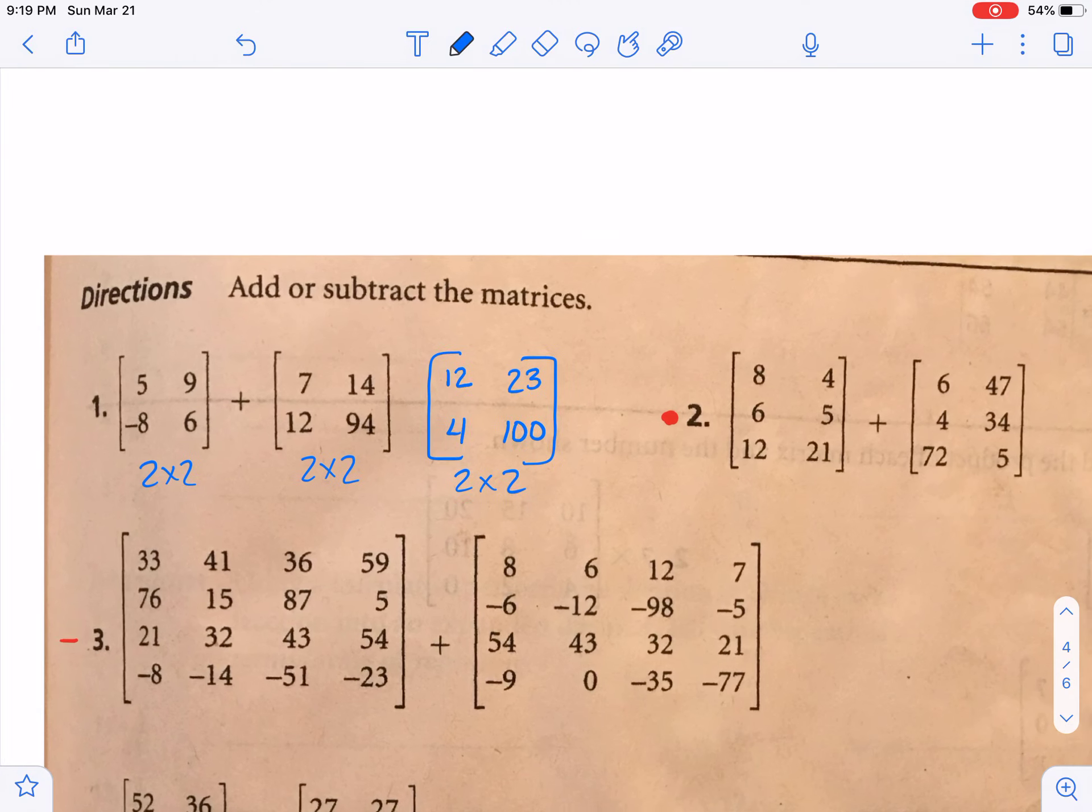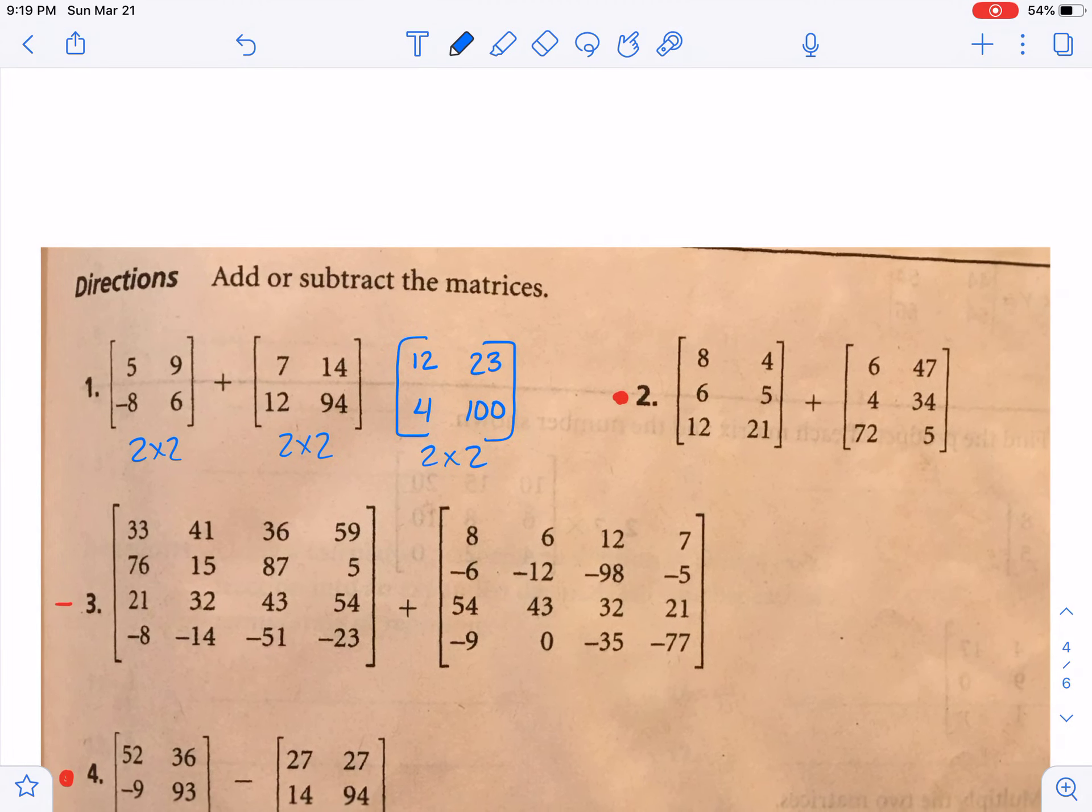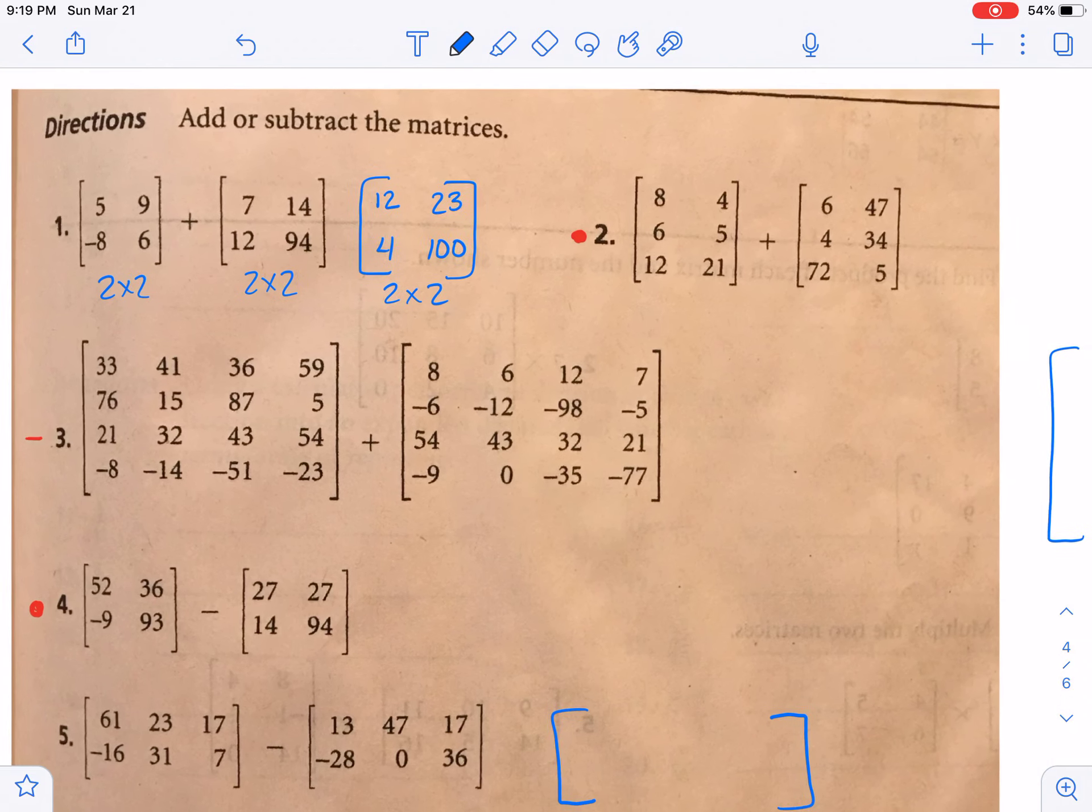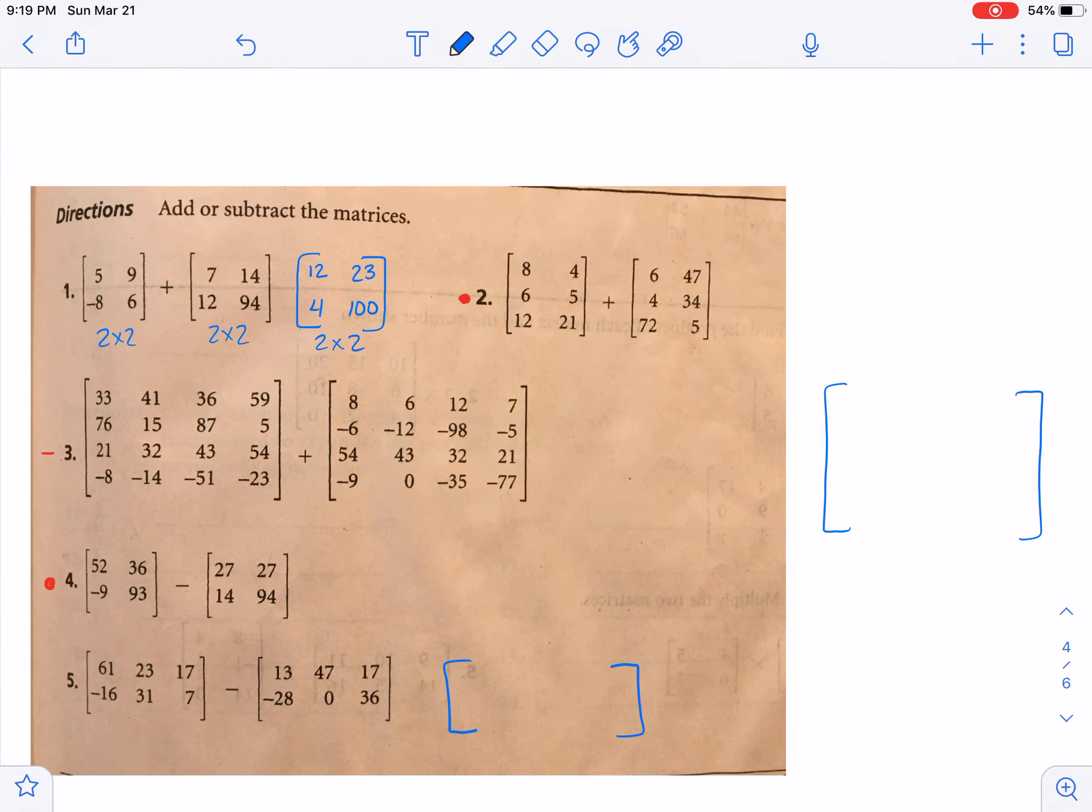Okay, so number two that you will do is going to be very similar to that. Number three, quite large there. We're going to do half of it together. We'll do the first two columns. Okay, so then we'll have a thirty-three and an eight, which makes forty-one. Then the forty-one that's here, along with the six, makes forty-seven.